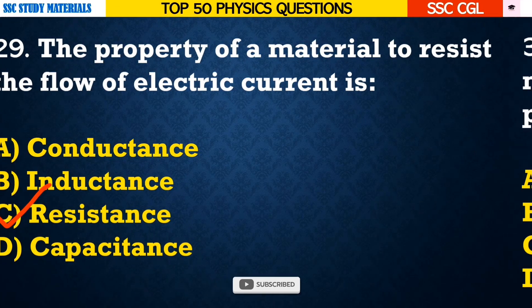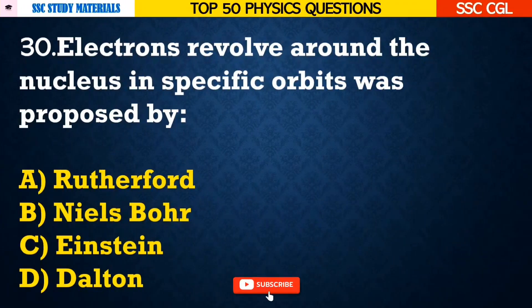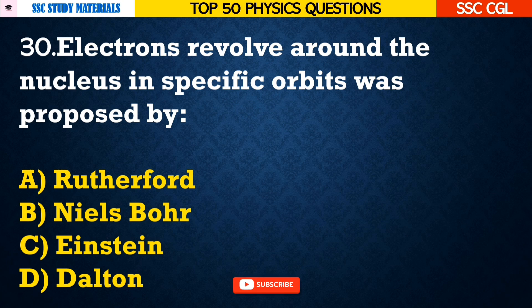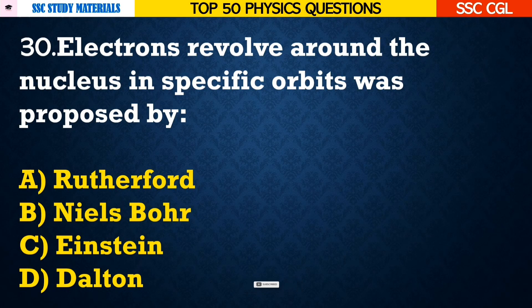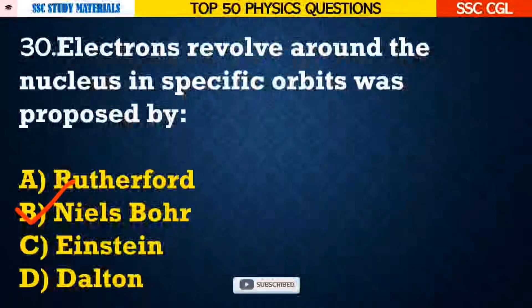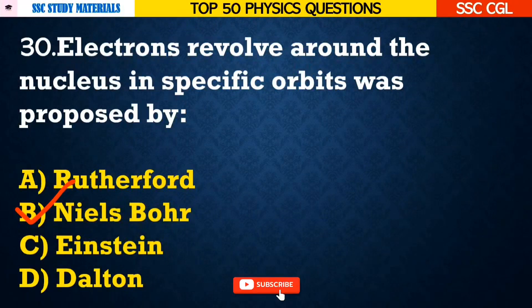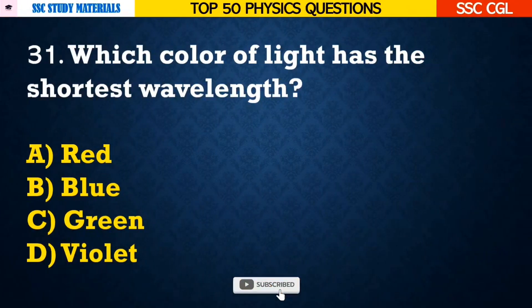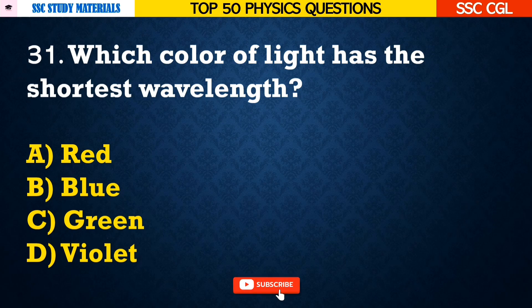Question number 30: Electrons revolve around the nucleus in specific orbits — this was proposed by — Answer B. Niels Bohr.